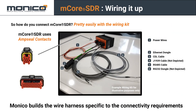Connecting the mCore is straightforward using the wiring kit. The mCore uses amp-seal contacts to maintain its IP66 and IP67 rating, protecting against dust and water. Monaco builds the wire harness specific to the connectivity requirements of what it's connecting to — for example, a CDL cable for a Caterpillar engine, a J1939 cable for a standard CAN network, or an RS-485 cable for a PLC. All cabling is provided depending on the asset type and where the data exists.